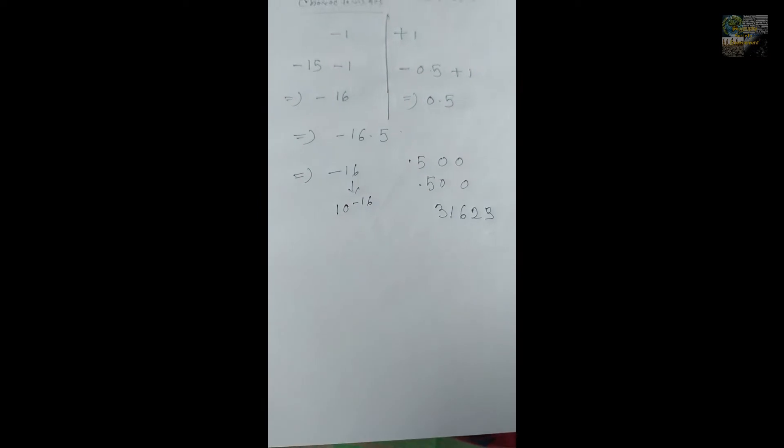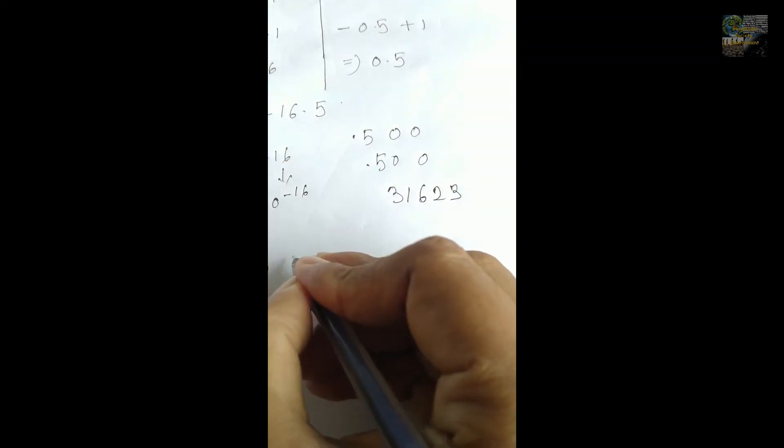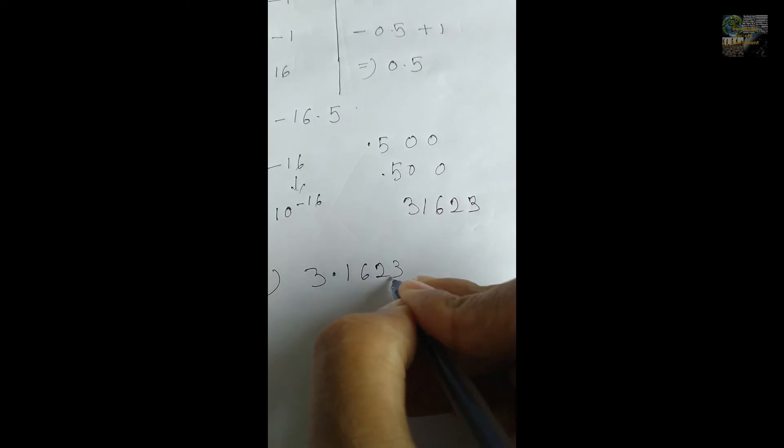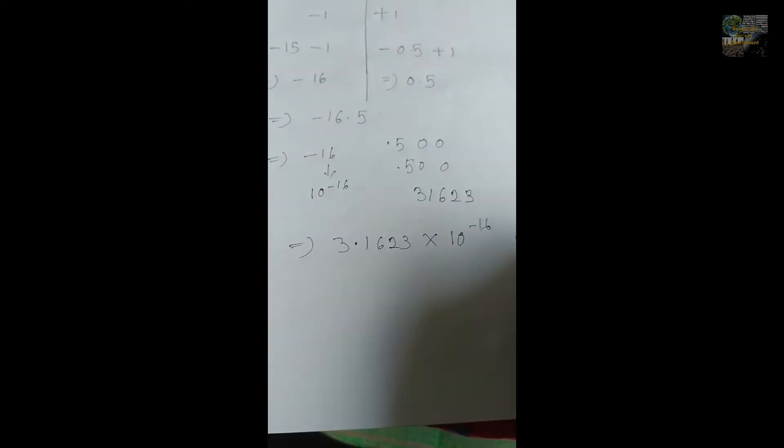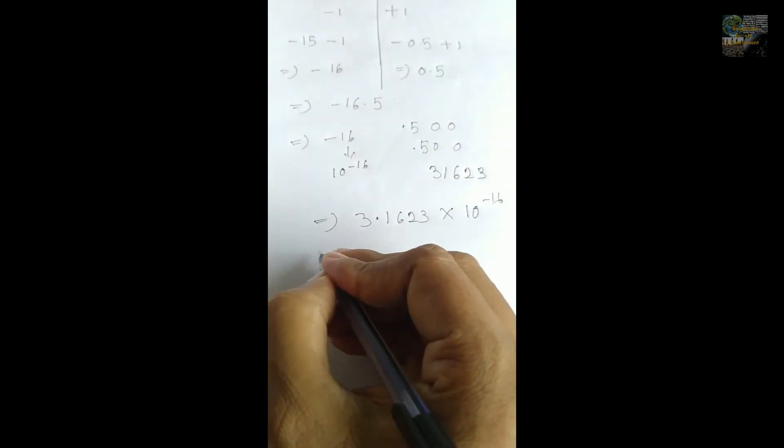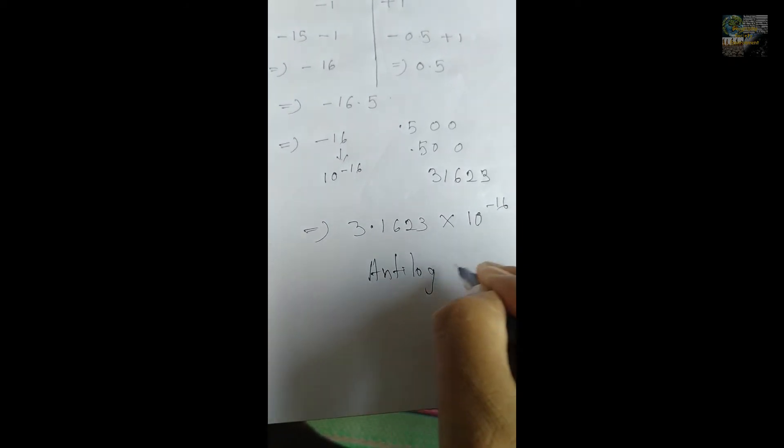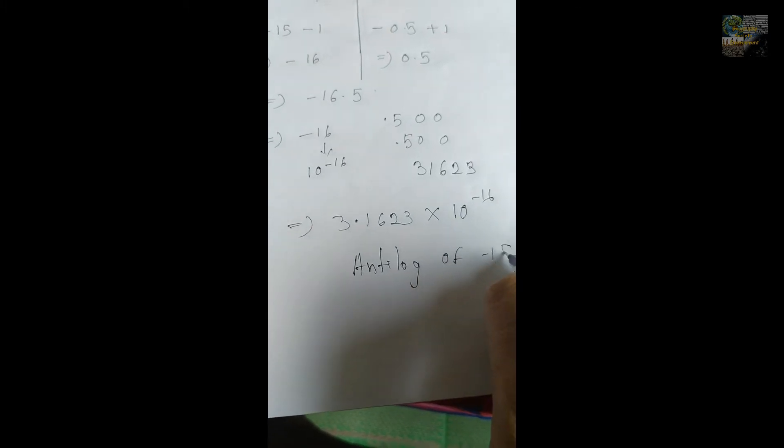It's time to finally find the antilog of minus 15.5, and I am writing here 3.1623 into 10 to the power minus 16. This is the antilog value of minus 15.5.